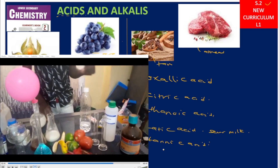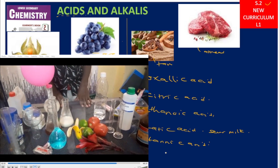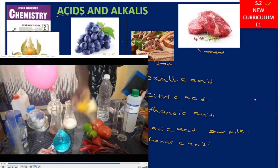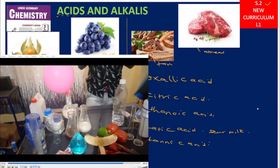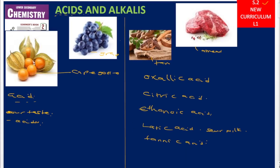Coming back to the definition of an acid: anything to be called an acid contains a sour taste, and what brings that sourness is hydrogen ions. Those hydrogen ions are the ions that cause the sourness. The acids we have seen from our laboratory are found in the foods we eat, so we term them organic acids.